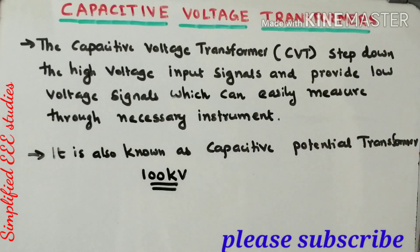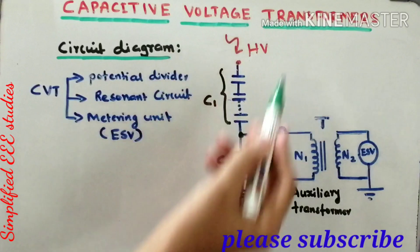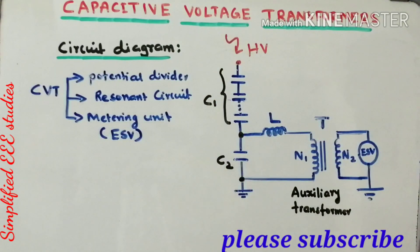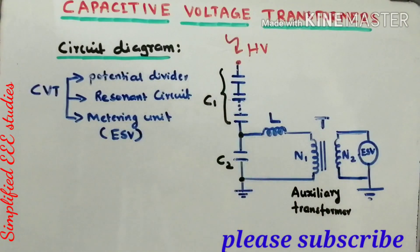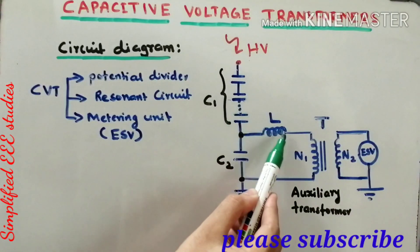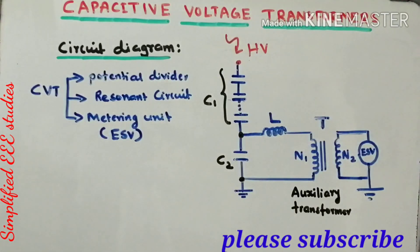Now let us discuss the circuit diagram of the capacitive voltage transformer and explain how you can measure high voltage using it. The circuit comprises a capacitive potential divider, a resonant circuit, and a meter unit.